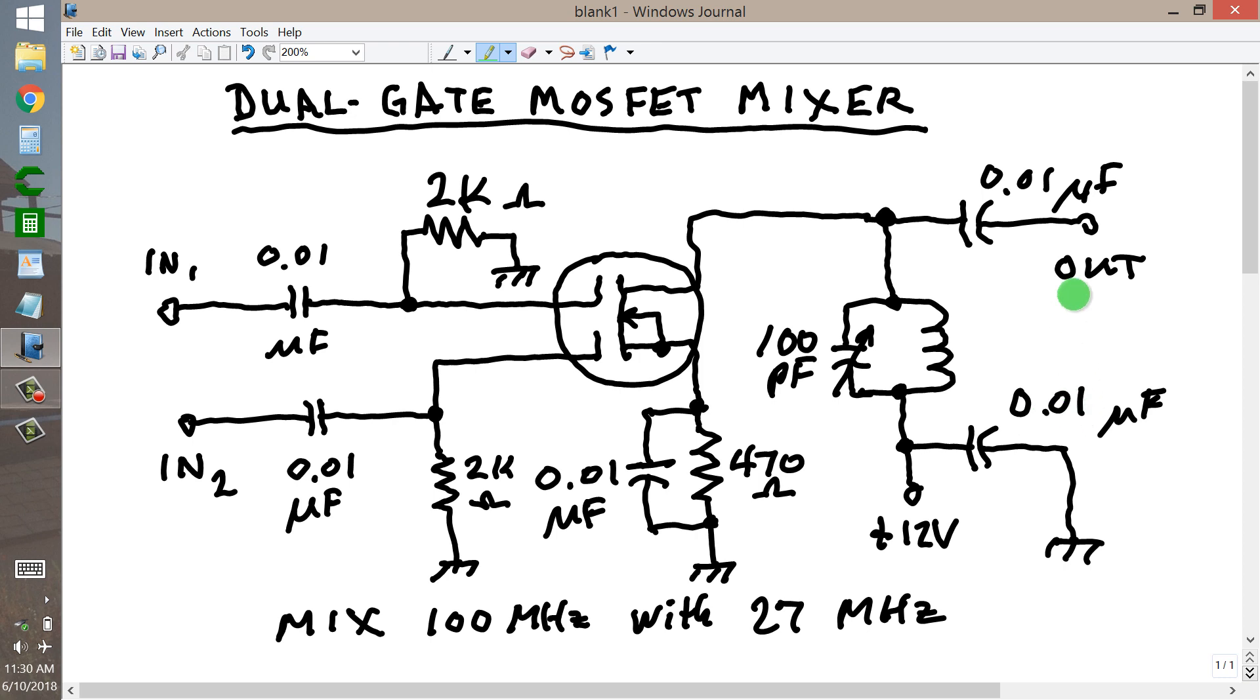The component values are just suggested, but these are as shown. This is a variable capacitor, and I don't know exactly what the value of L would be, something that will allow tuning to the frequency of output that you want, which is either 100 MHz plus 27 MHz, which would be 127 MHz, or 100 MHz minus 27 MHz, which would be 73 MHz.